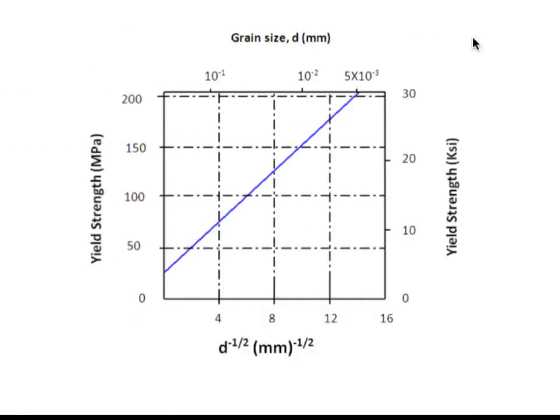This can be illustrated in a diagram like this, where we have the yield strength on this axis, and the inverse of the square root of the grain size on this axis. This means that we have larger grain sizes going in this direction, and then we get a lower yield strength. When we have smaller grain sizes, we will have a larger yield strength.